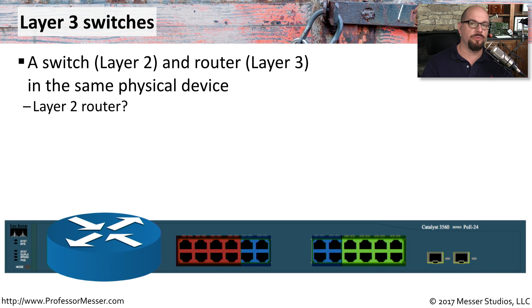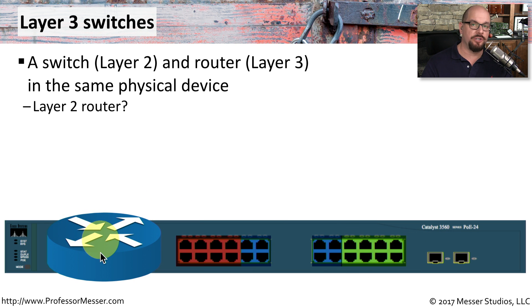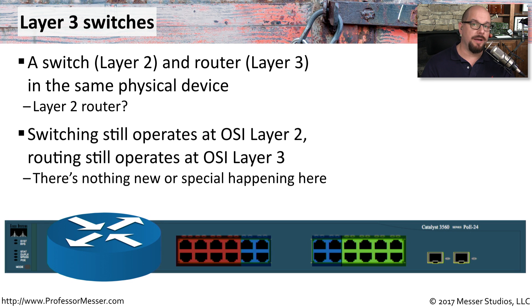It's very common to see switches and routers as separate physical devices, but we can also find switches with routing capability enabled — commonly referred to as layer three switches. This takes all switch functionality and adds routing within the same device. The switching still operates at layer two, making forwarding decisions based on MAC address, but you can also configure interfaces to act as routed interfaces forwarding traffic based on the layer three IP configuration. It's simply combining both a switch and a router within the same physical device.